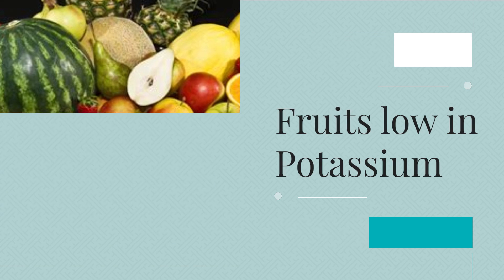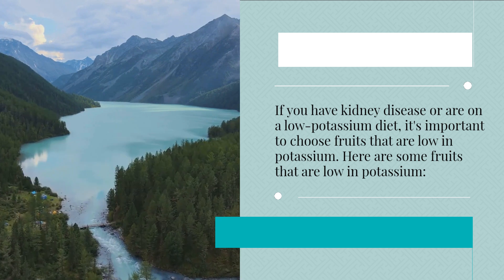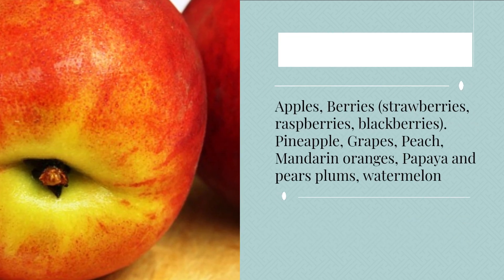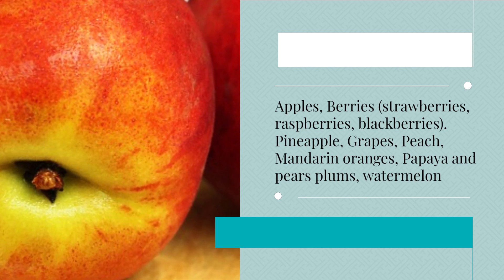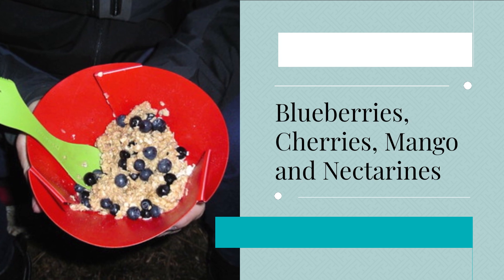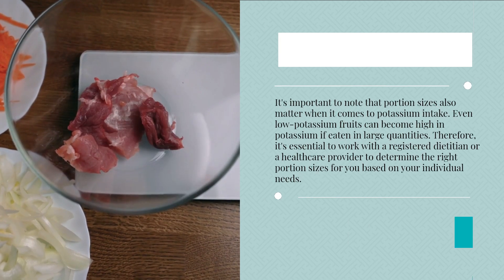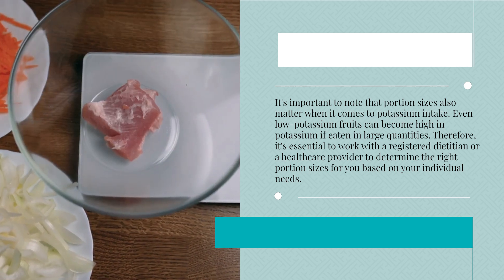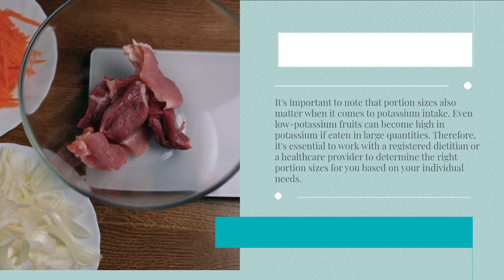Fruits low in potassium: If you have kidney disease or are on a low potassium diet, it's important to choose fruits that are low in potassium. These include apples, berries (strawberries, raspberries, blackberries), pineapple, grapes, peach, mandarin oranges, papaya, pears, plums, watermelon, blueberries, cherries, mango, and nectarines. Note that portion sizes matter — even low potassium fruits can become high in potassium if eaten in large quantities. It's essential to work with a registered dietitian or healthcare provider to determine the right portion sizes based on your individual needs.